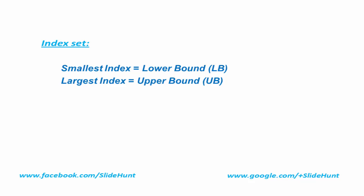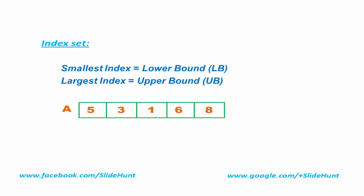For example, here we take an array 'a' which has 5 elements, and all the elements are stored in successive memory locations. The first element is denoted by a[0], the second element by a[1], the third element by a[2], and this procedure continues. Since we start from 0, the last element of the array is denoted by a[size - 1].